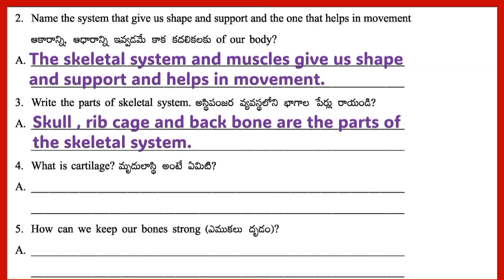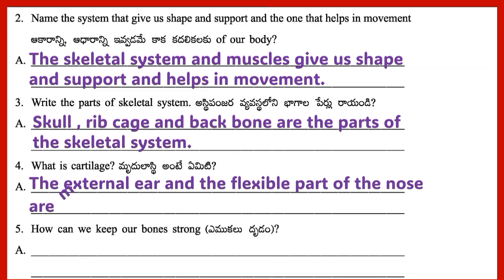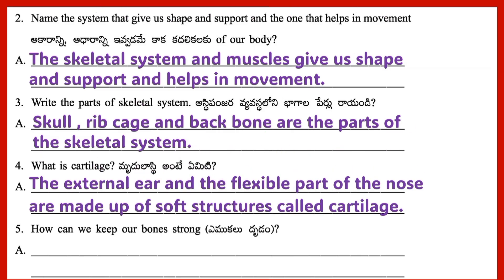Question 4: What is cartilage? Answer: The external ear and the flexible part of the nose are made up of soft structures called cartilage.